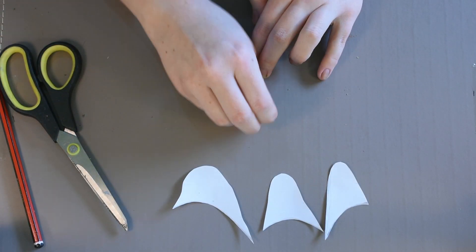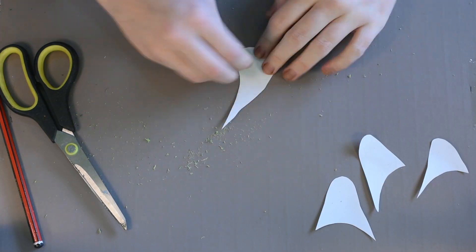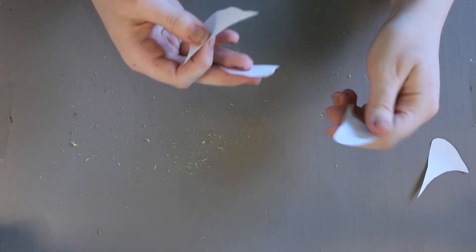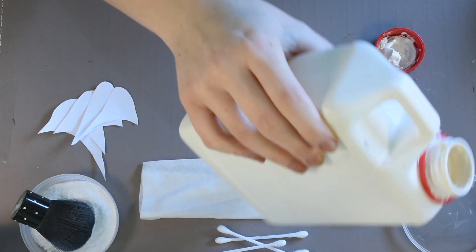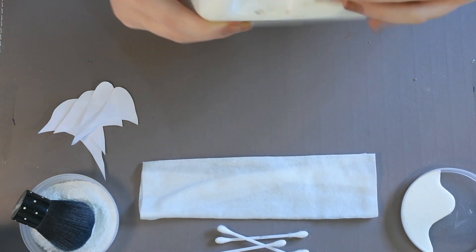Carefully rub out your pencil marks and try not to crease your paper while you do this, because this will show up in your final piece. Get your liquid latex and pour a little bit into a dish of some sort.